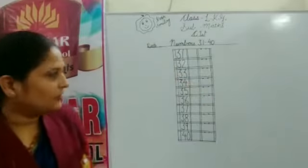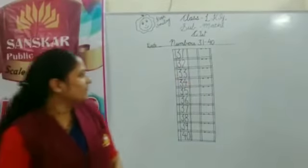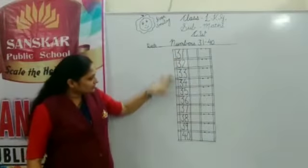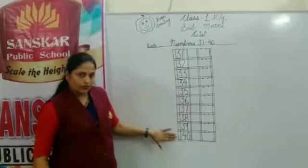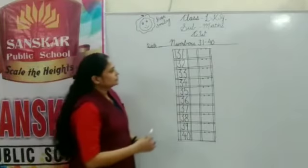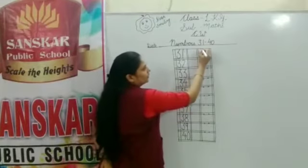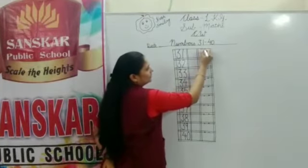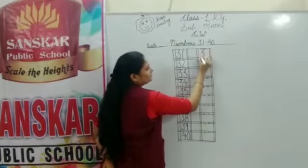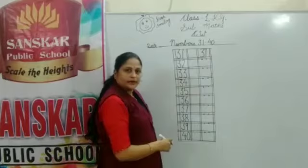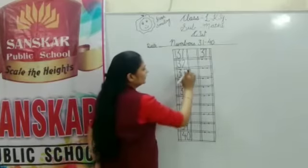So now look at the front. How we will write numbers 31 to 40. First of all, put pencil on dot and write down 3, 1 — 31. Understood? First number.